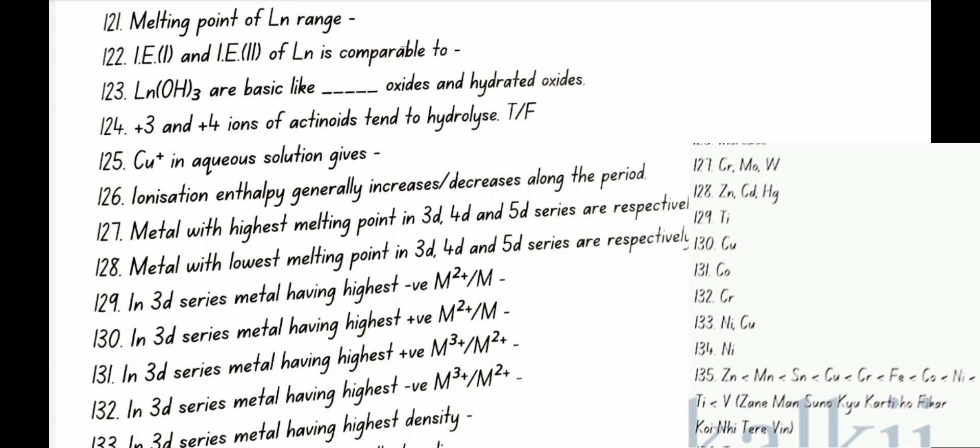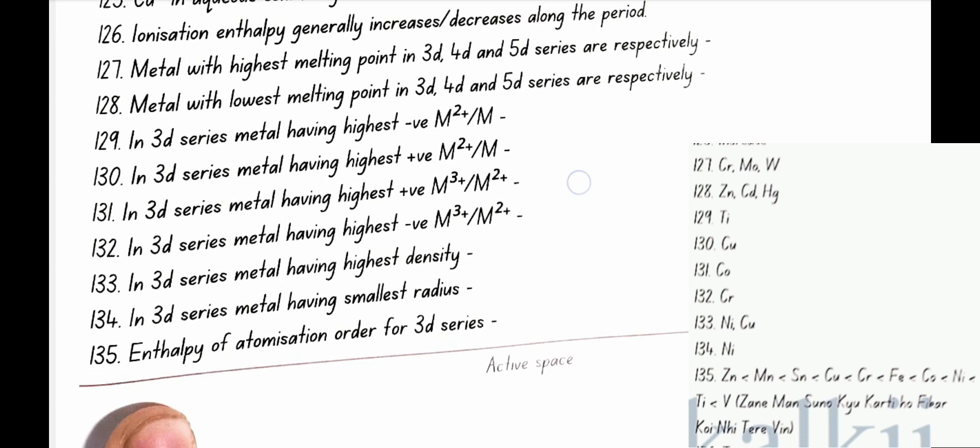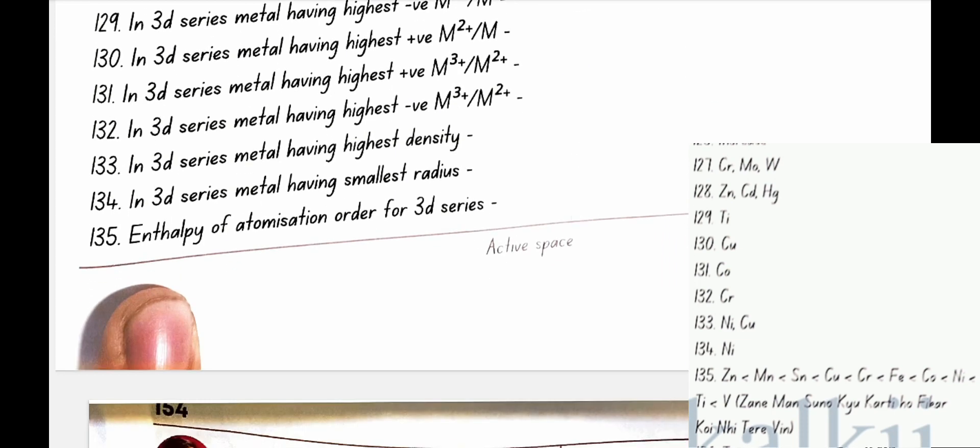Metal with highest melting point in 3d 4d and 5d series respectively: Cr Mo and W. Metal with lowest melting point in 3d 4d and 5d series respectively: Zn Cd and Hg. In 3d series metal having highest negative M2 plus or M: Ti. In 3d series metal having highest positive M2 plus or M: Cu. In 3d series metal having highest positive M3 plus to M2 plus: Cobalt. In 3d series metal having highest negative M3 plus or M2 plus: Cr. In 3d series metal having highest density: Nickel and copper. In 3d series metal having smallest radius: Nickel.